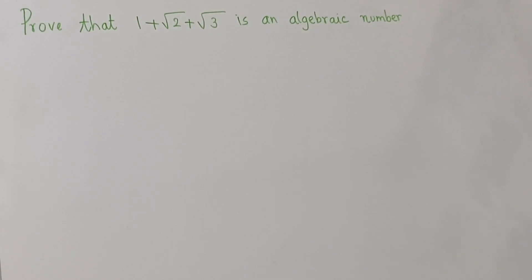So x minus 1 whole square is 5 plus 2 root 6. Therefore x minus 1 whole square minus 5, this whole thing divided by 2, is equal to root 6. Now squaring this quantity we get one fourth into x minus 1 whole square minus 5, this whole square, is equal to 6.